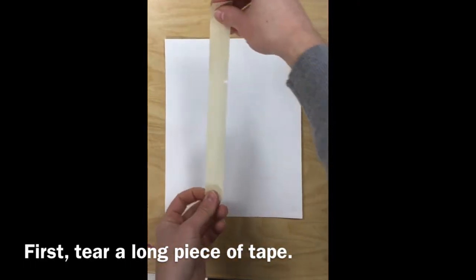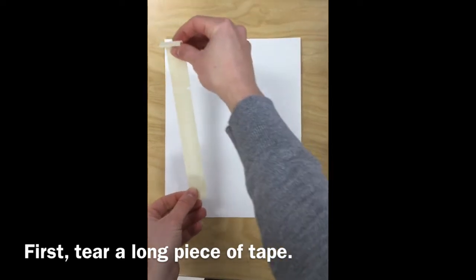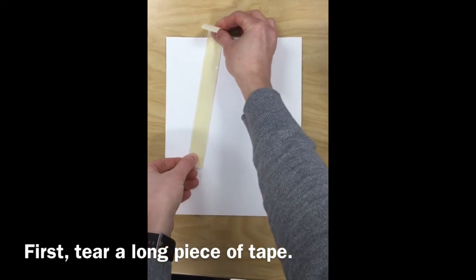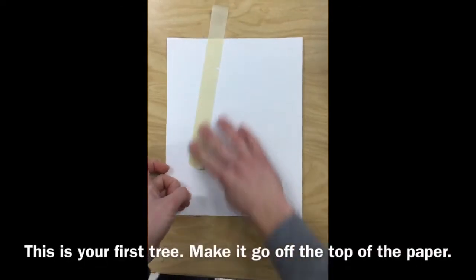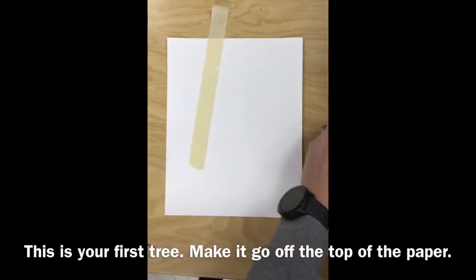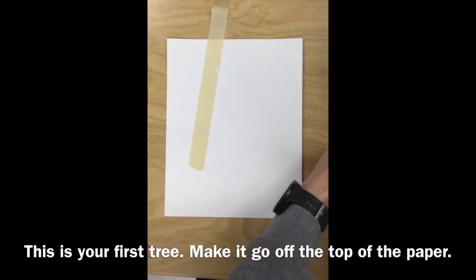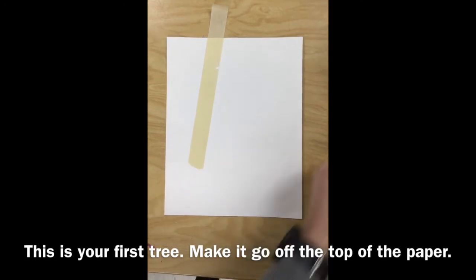First, you're going to tear a long piece of tape, then place it on your paper. This is your first tree, so it should be angled slightly, and you're going to make it go off of the top of the paper.